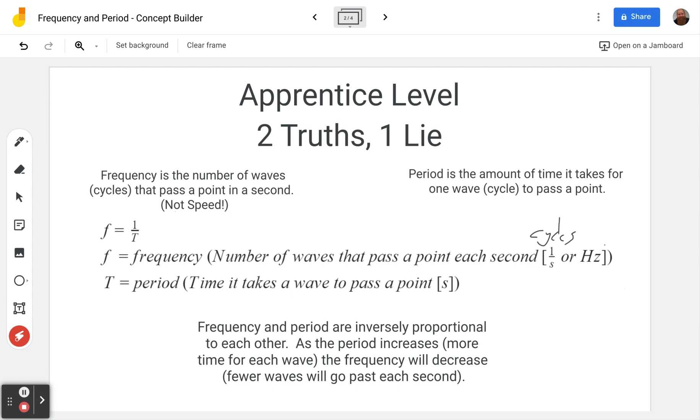So you start the stopwatch when the crest of the wave gets there, when the next crest gets there you stop it, and you have one period. So our equation that relates these two is that the frequency is equal to one over the period, or the period is one over the frequency. Either way is fine to put it.